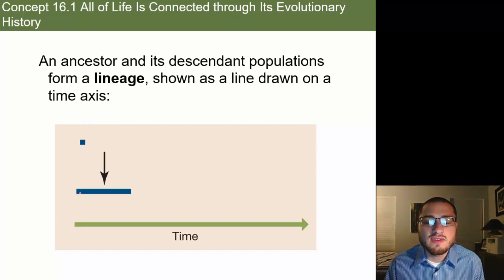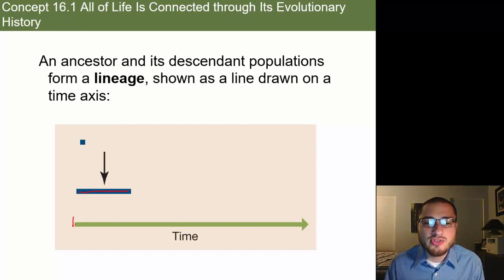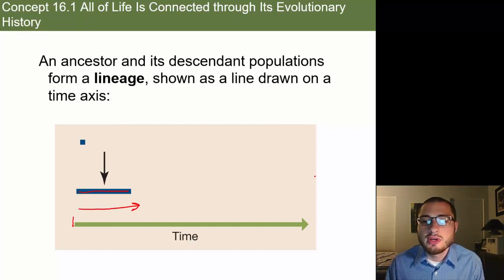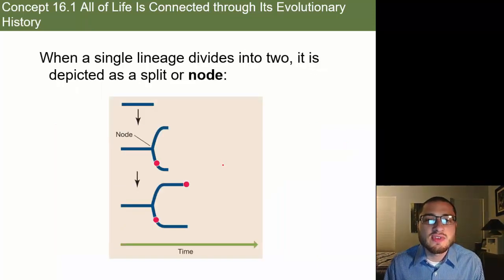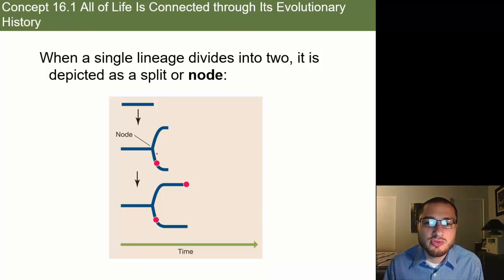When looking at a phylogenetic tree, we see different branches. One branch is called a lineage. Usually time is shown at the bottom, so as we move forward we're getting closer and closer to present day. When you look at a specific node — when a single lineage divides into two — it's depicted as a split or a node.